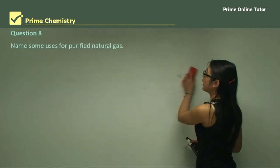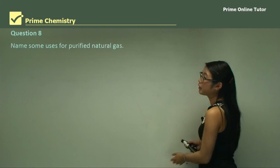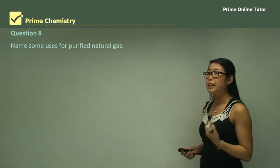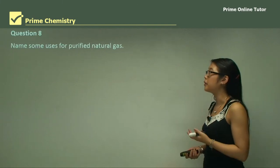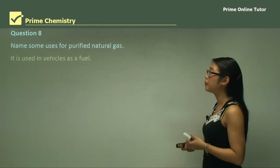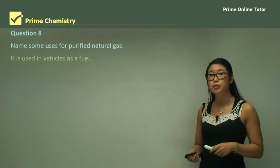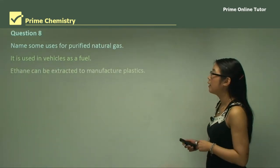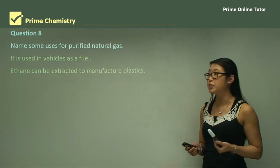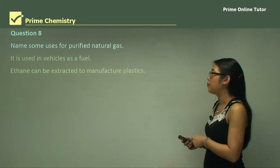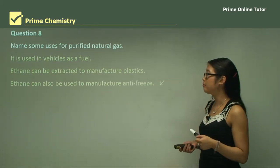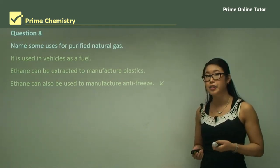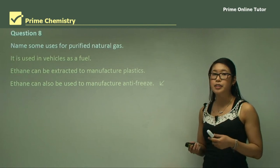Question eight: name some uses for purified natural gas. Purified natural gas is a gaseous form that can be pressurised into a liquefied version and used as a fuel in vehicles. Ethane is also removed from this fraction to manufacture plastics. Ethane is also used to manufacture antifreeze, which stops car engines from freezing in the cold.